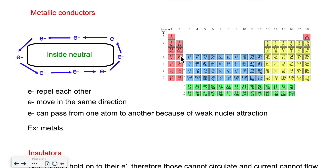So the electrons in metals are not as attracted to the nucleus — they're held more loosely because there are fewer protons to attract them. Non-metals have more protons for any given period, and because of that the electrons are held much more tightly and can't move around very easily. That's why metals are the type of substances that will conduct electricity.